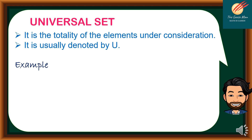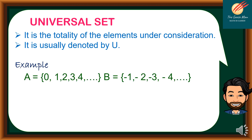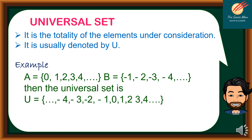For example, if A = {0, 1, 2, 3, 4} and B = {-1, -2, -3, -4, ...}, then the universal set U = {..., -4, -3, -2, -1, 0, 1, 2, 3, 4, ...}. In short, we can rewrite this as: universal set U = {X | X is an integer}.